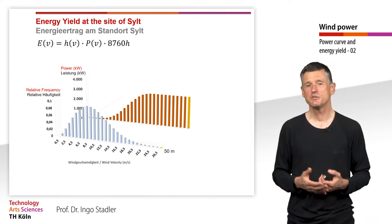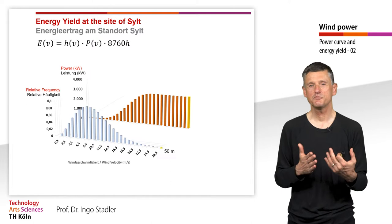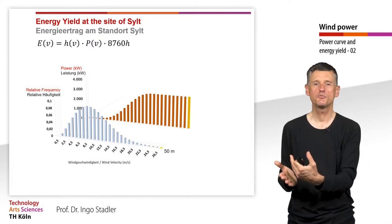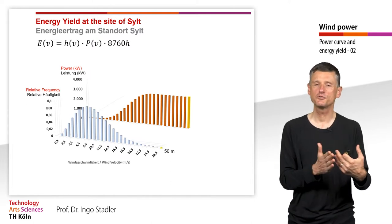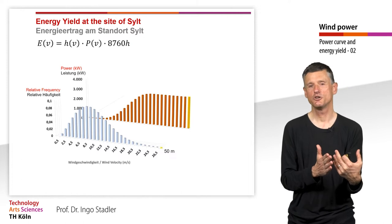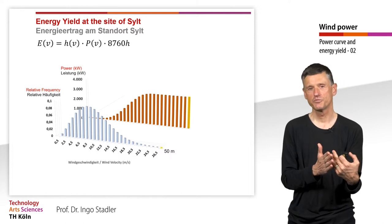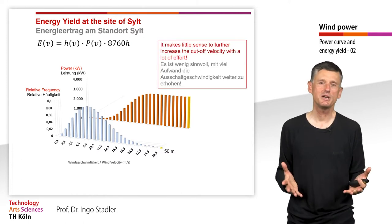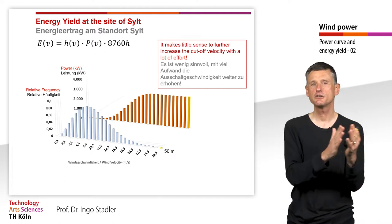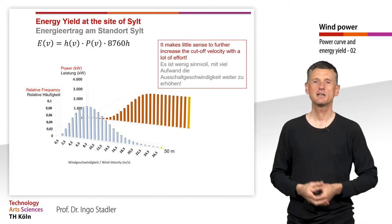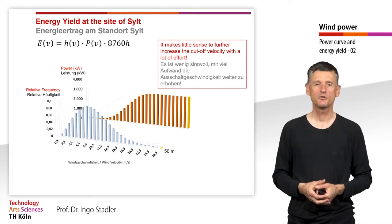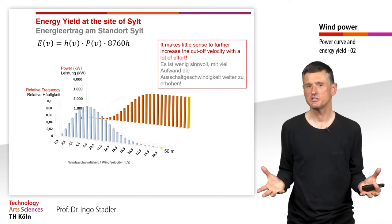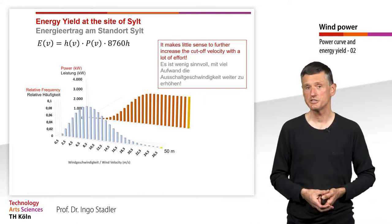When we reach the cut-off wind speed, we see that the probability of those very high wind speeds is almost zero. So it doesn't really make sense to increase the cut-off velocity either, because the contribution of those wind speeds is almost zero.